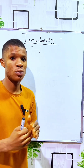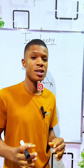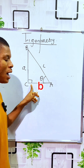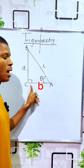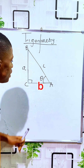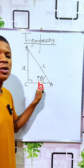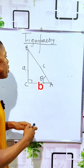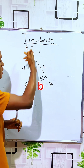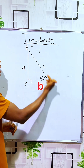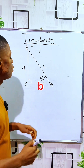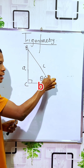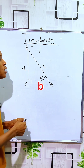Let's consider this right-angled triangle on the board, which has a right angle at angle C. This angle here is called theta. We have the sides BC, CA, and AB. The side that is always facing the right angle is always seen as the hypotenuse.